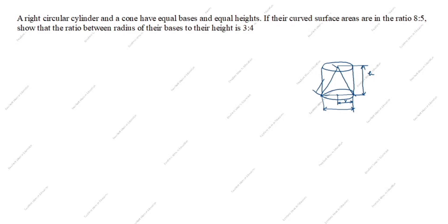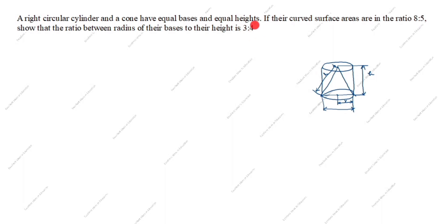This is slant height l. What we need to find? Show that — show that means proof — that the ratio between radius of the base to the height is 3 is to 4. r is to h is equal to 3 is to 4. We need to prove this.